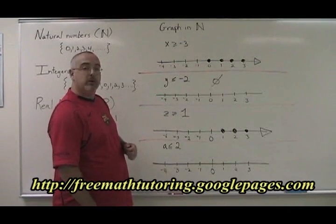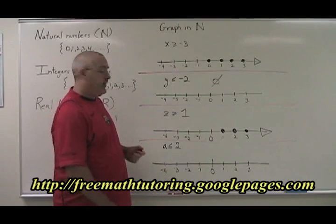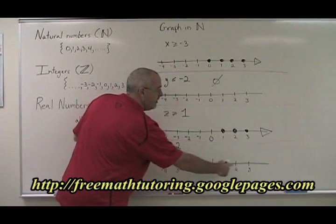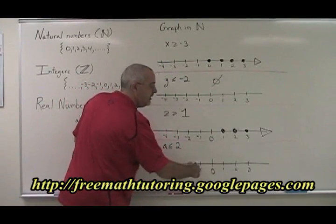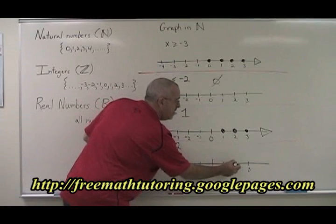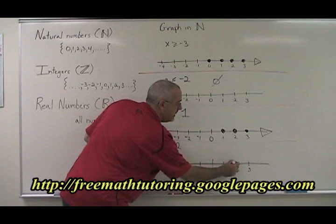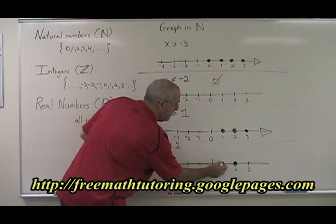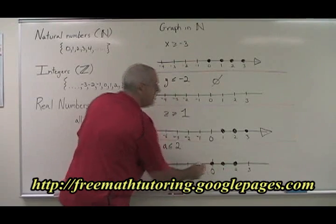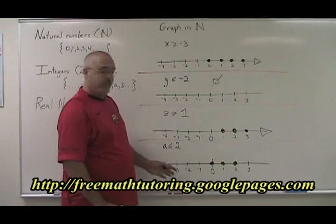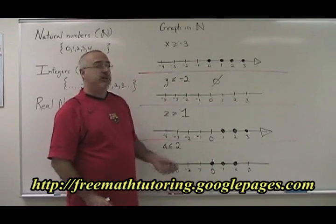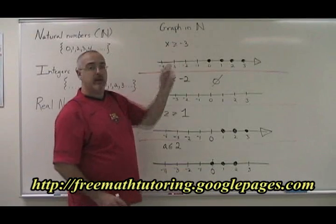a less than or equal to two. The numbers less than or equal to two are over here. Two is equal to two, so it's part of the answer. One and zero are less than two, so they are part of the answer. But now you have to stop, because the negative numbers cannot be part of the answer — they are not natural numbers.